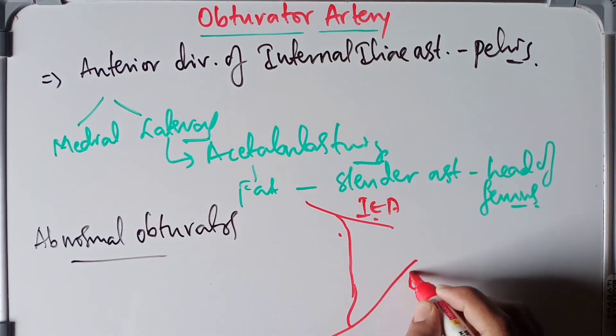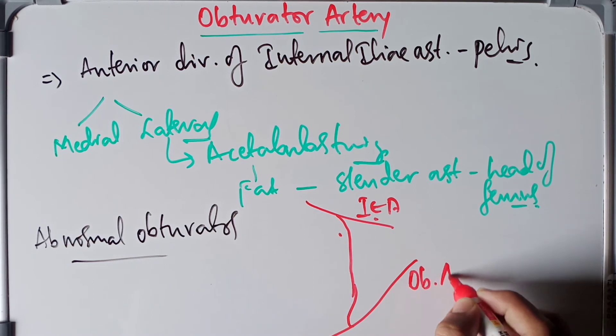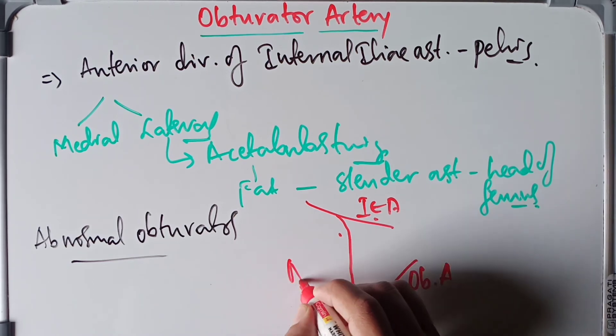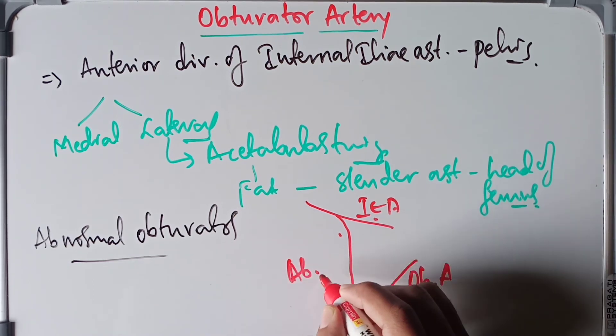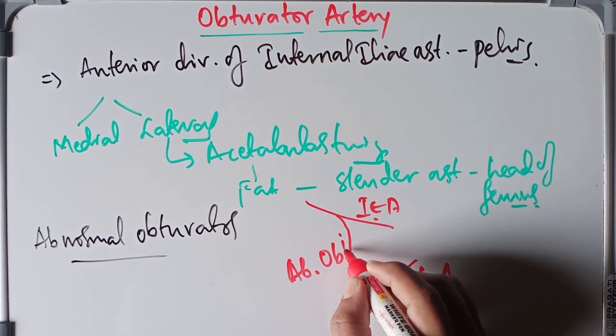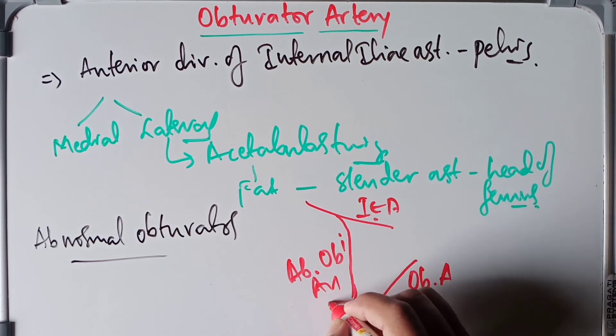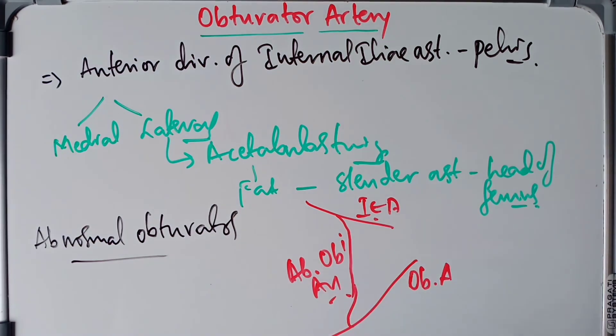Here, this is the inferior epigastric artery, this is the obturator artery, and this is the abnormal obturator artery. So that covers the anatomy of the obturator artery and also the abnormal obturator artery.